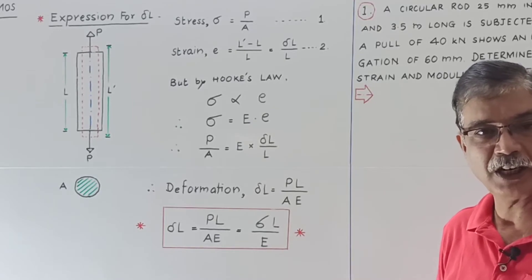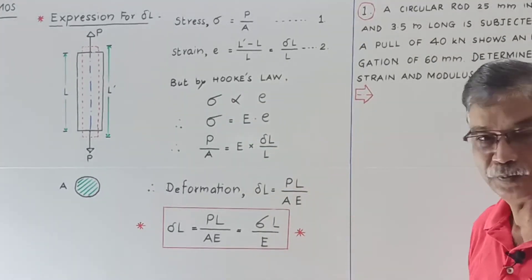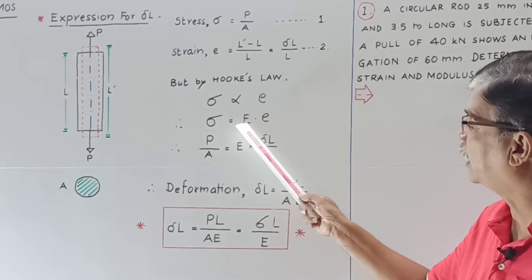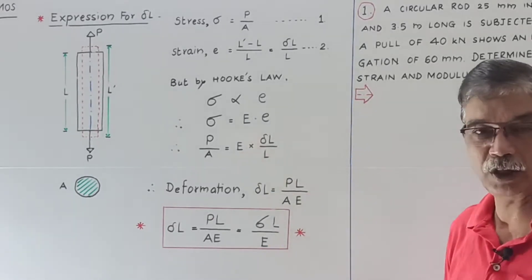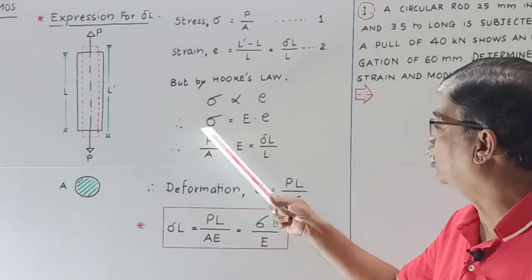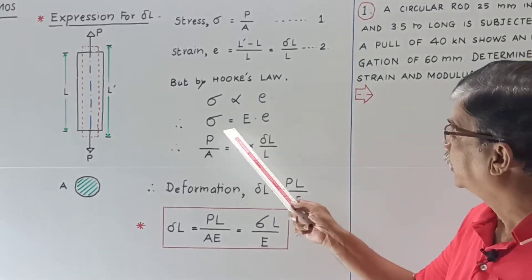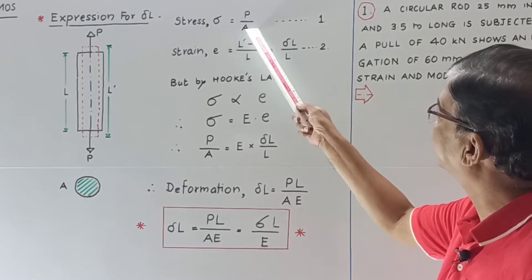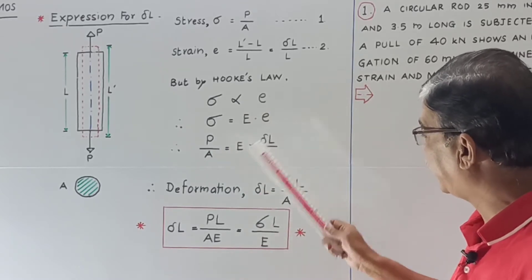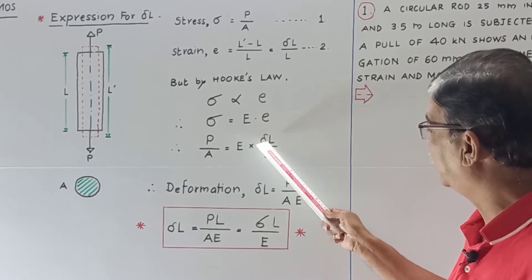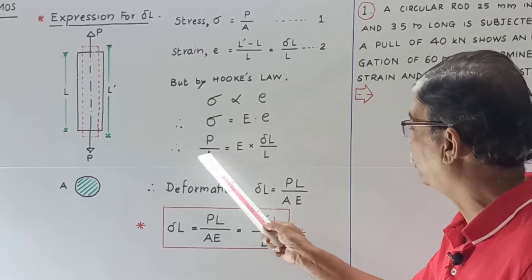In the previous video, we saw that within the elastic limit, stress is directly proportional to strain — that is by Hooke's Law. Therefore, stress is equal to capital E into small e, that is strain, where capital E is known as modulus of elasticity. It is the ratio of stress upon strain within the elastic limit. Now, putting sigma = P/A and strain = delta L / L, we can find out the very important expression for deformation: delta L is equal to P into L upon A into E.